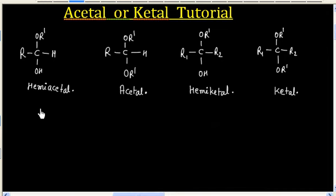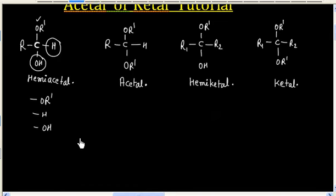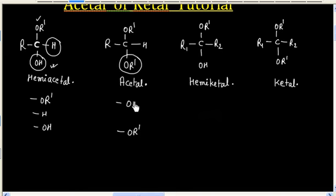In the case of hemiacetal, this carbon has one OR group, it has a hydrogen, and it has an OH group. Now in the case of acetal, this OH is replaced by an OR group, so in this case we have two OR groups and a hydrogen.